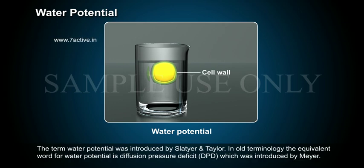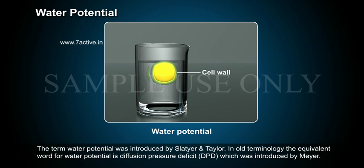The term water potential was introduced by Slater and Taylor. In old terminology, the equivalent word for water potential is Diffusion Pressure Deficit, DPD, which was introduced by Meyer.